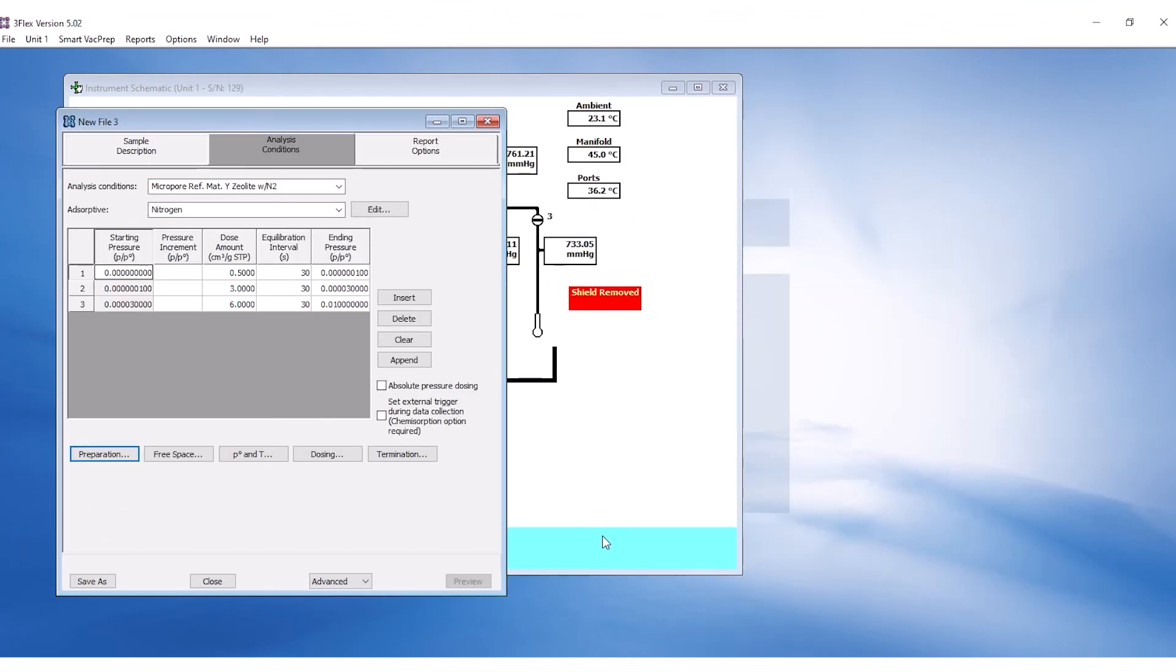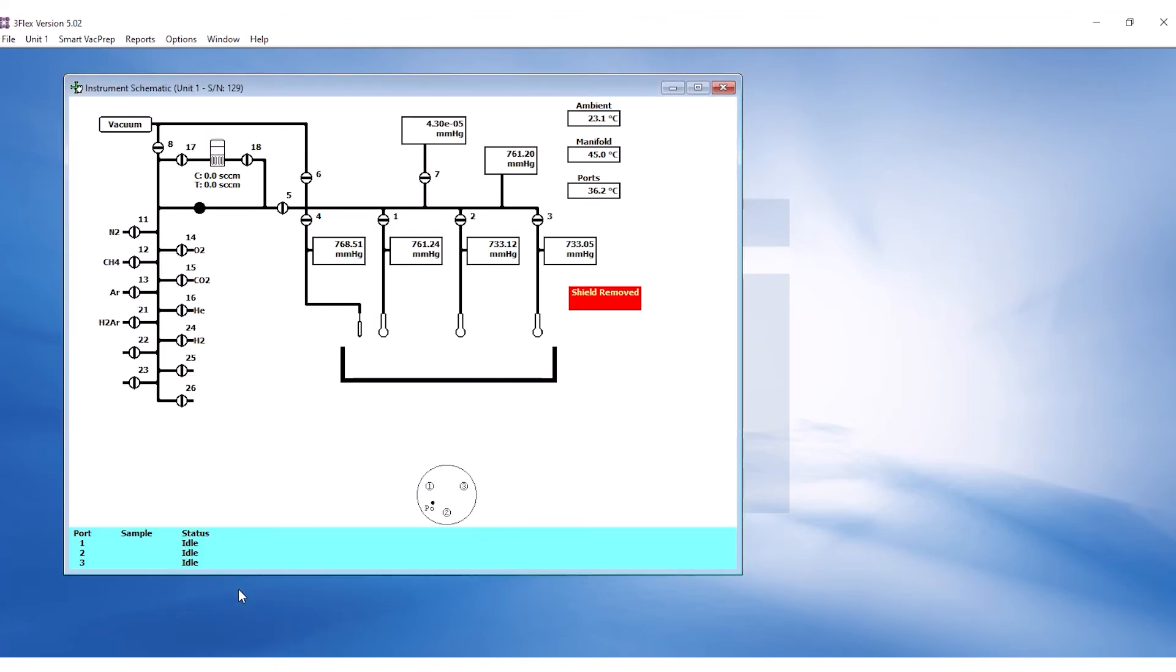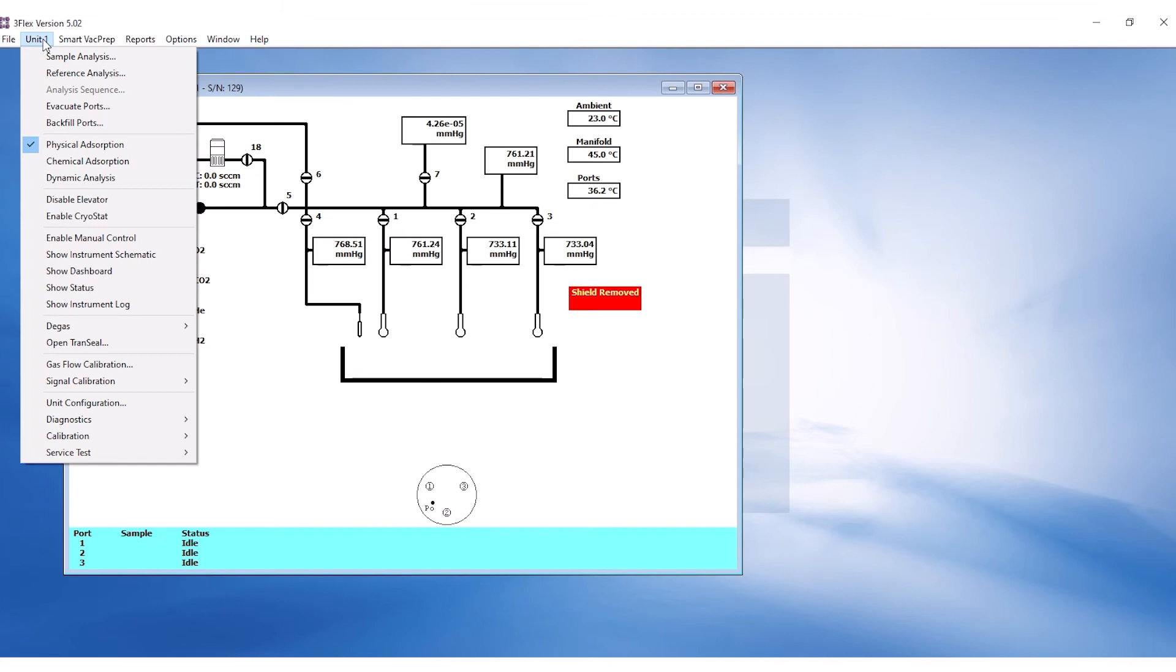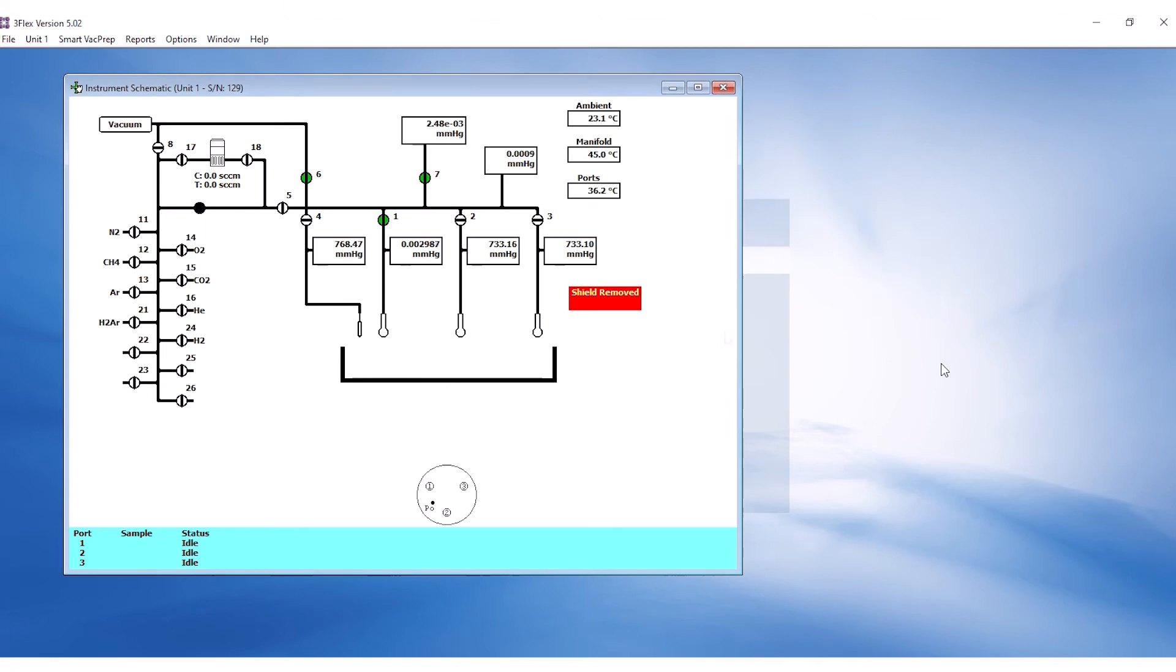Since Backfill is unchecked on the SMP file, the sample tube must be evacuated before analysis. Click on the unit menu and click Evacuate Ports. Select the port the sample tube is attached to and click Start. This will automatically backfill the manifold to match the pressure of the sample tube and slowly start to evacuate. Click Done once complete.